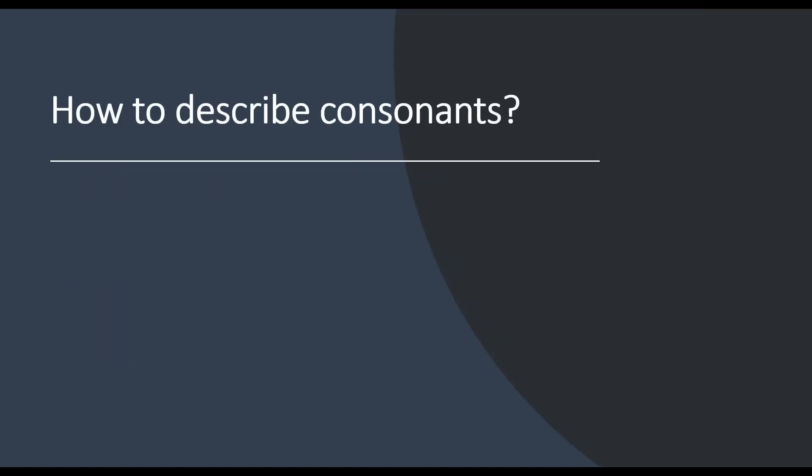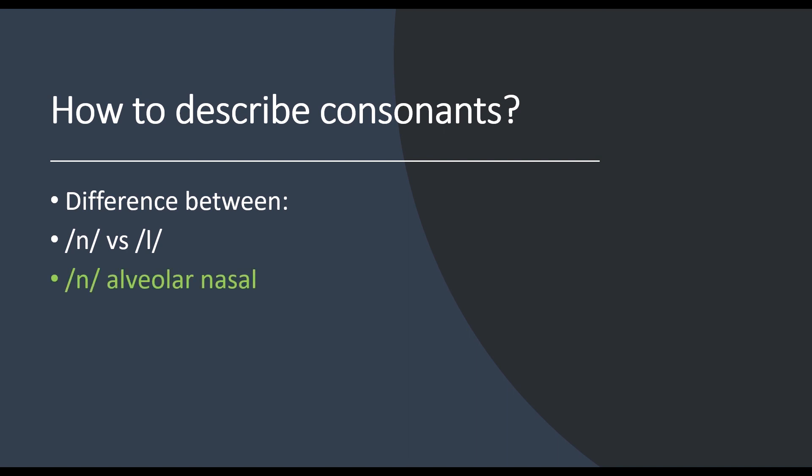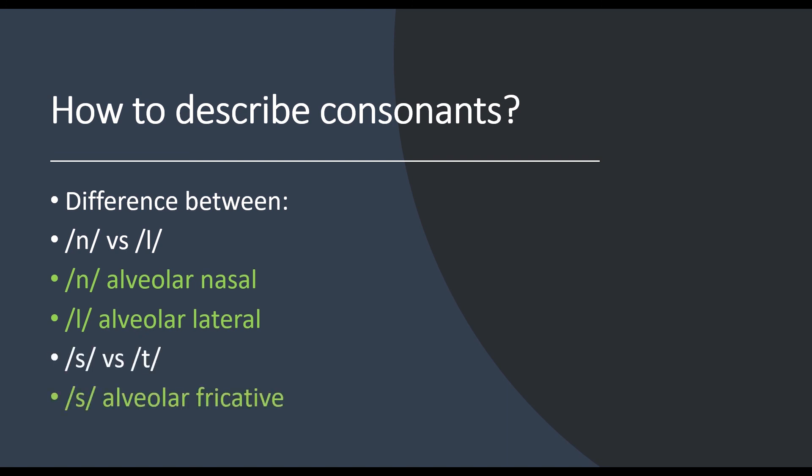Going back to our opening examples: what is the difference between n and l? It's simple — n is an alveolar nasal, occurring at the alveolar ridge with air coming out of the nose, while l is an alveolar lateral, also at the alveolar ridge but with air coming out through the sides of the tongue. And for s and t: s is an alveolar fricative, which can be prolonged as turbulent air comes out of the mouth, while t is an alveolar stop, which cannot be prolonged. All four sounds are alveolar, but each differs because of manner of articulation.